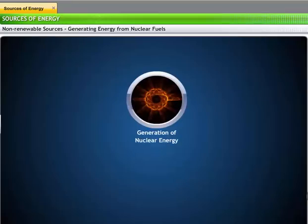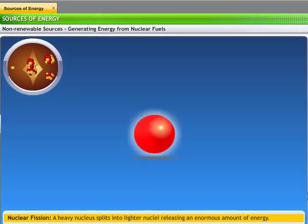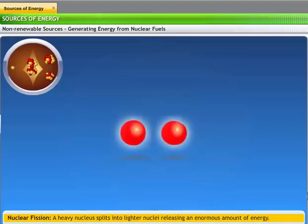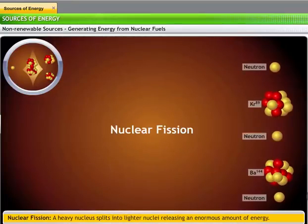Nuclear energy can be generated through nuclear fission or fusion. Nuclear fission occurs when an unstable nucleus splits into lighter nuclei. During the split, an enormous amount of energy is released. For example, when an unstable nucleus like uranium-235 is bombarded with a slow-moving neutron, it splits into two lighter nuclei, namely barium and krypton.